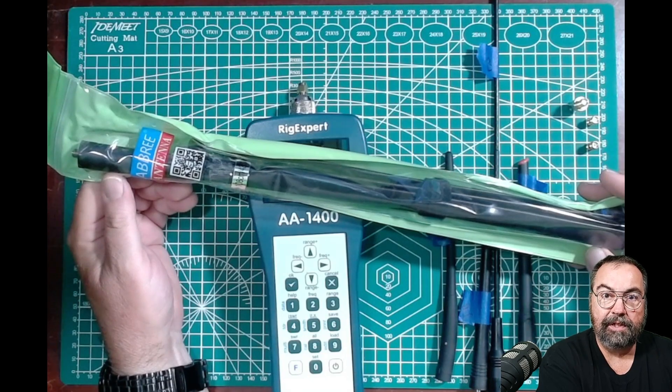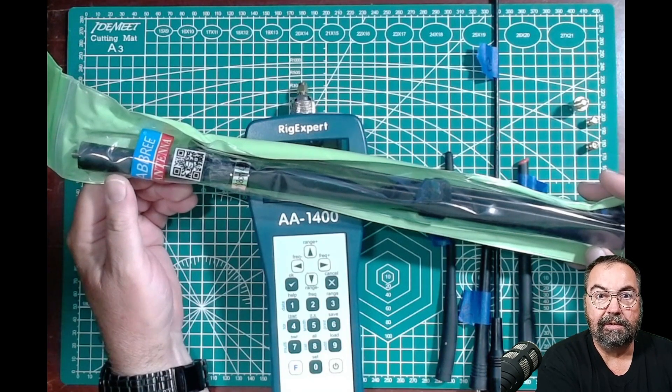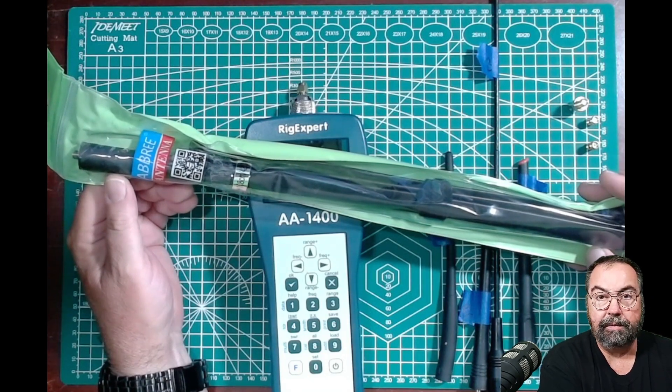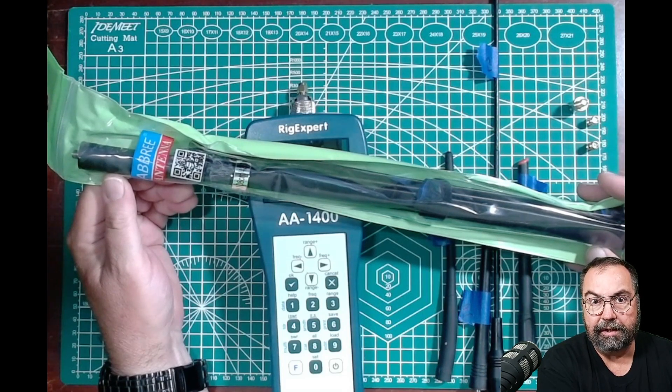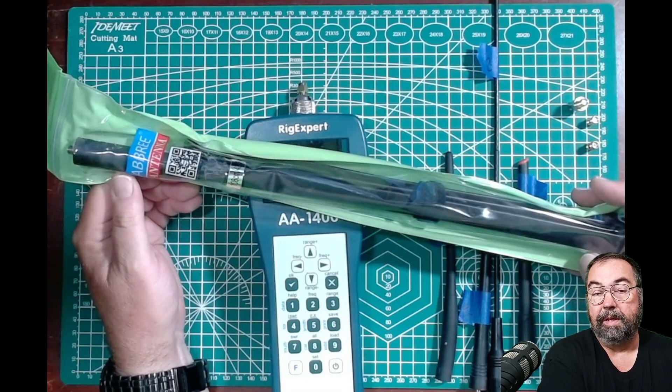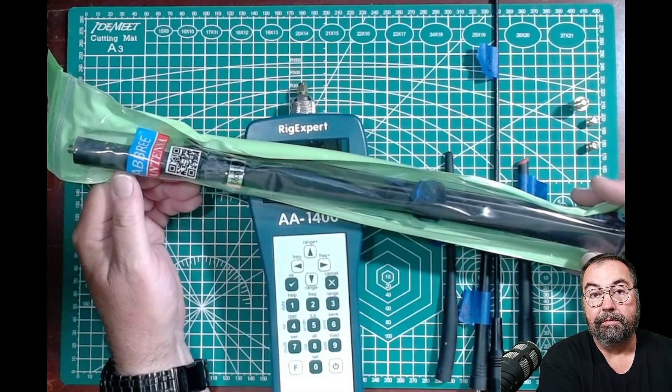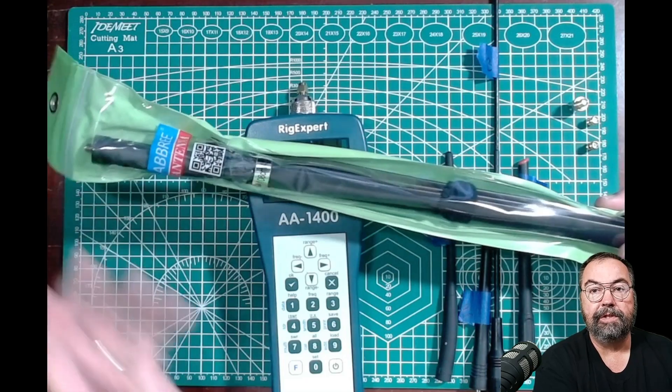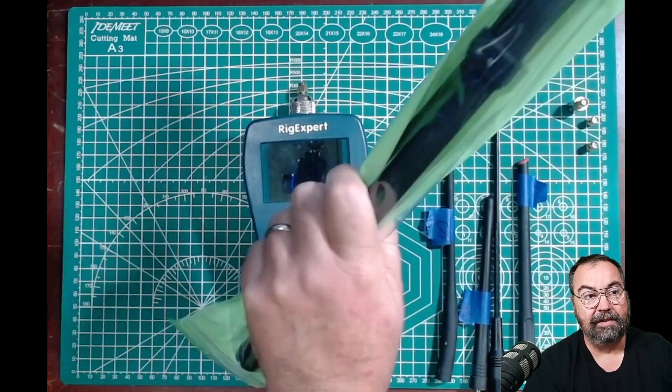So when it's fully extended, it is 42 inches long. I did a video on this probably well over a year ago where we put this on the spectrum analyzer. And if I recall that video correctly, it was surprisingly fairly good results. So what I want to do this week is I want to take this crazy thing.